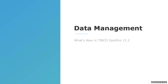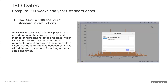In data management and wrangling, with Spotfire 12.2 we added support for ISO date formatting in visualizations, and also added ISO weeks and ISO year as functions to be used in calculations — for instance, adding a calculated column with ISO dates.